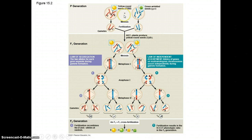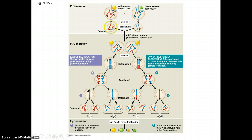The behavior of chromosomes during meiosis can account for Mendel's law of segregation and independent assortment. If you look at this figure, you can see that you have your yellow round seeds and your green wrinkled seeds and the chromosomes within them. These are the gametes produced by meiosis. When fertilization occurs, these two come together, and you have a recombination of genetic information in each of these two cells.